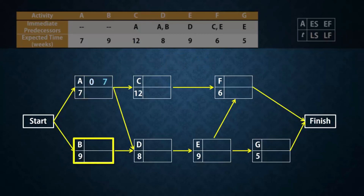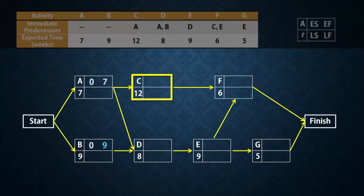B also has an earliest start time of 0, and with an activity time of 9, it will have an earliest finish time of 9. Now C needs A to be completed before it can start. Since the earliest finish time for A is 7, then the earliest time C can start is 7. And with an activity time of 12 weeks, C will have an earliest finish time of 12 plus 7, which gives 19.